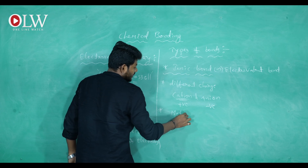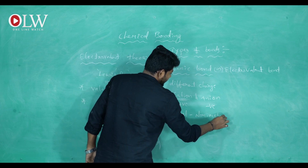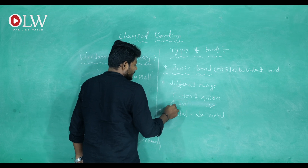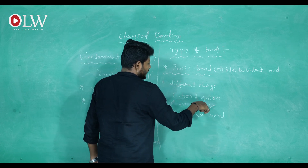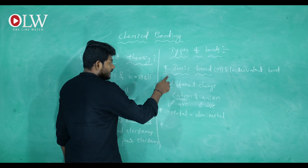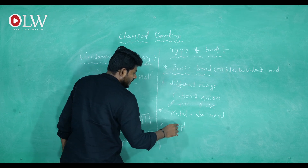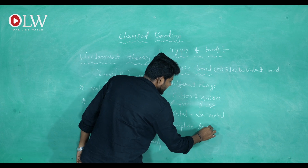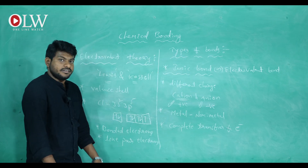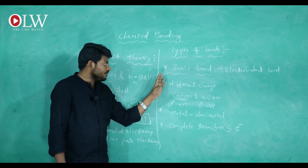The second rule is that one element must be a metal and the other must be a non-metal. Cations or positively charged elements are mostly metals, and anions or negatively charged elements are mostly non-metals. The third and most important rule is that complete transfer of electrons takes place — not sharing, but complete transfer.